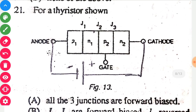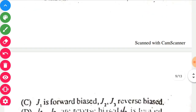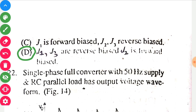21st question: for a thyristor where the negative terminal of the battery is connected to the anode and the positive terminal to the cathode, J1 and J3 will be reverse biased while a very small leakage current will pass through the J2 junction. So option D is correct.